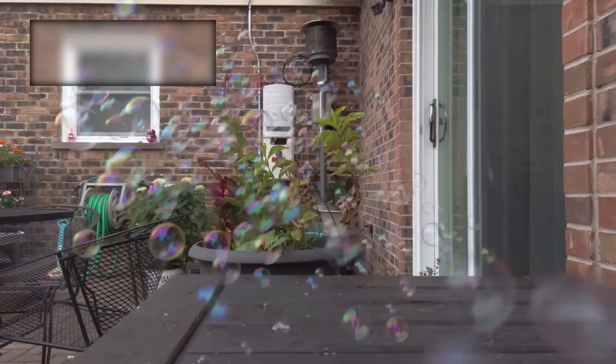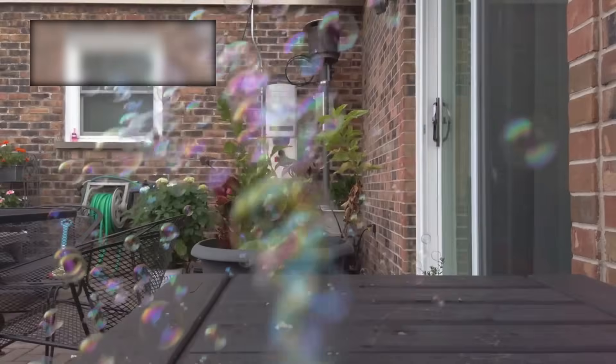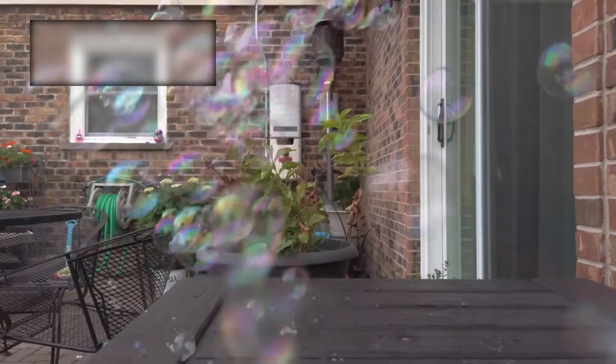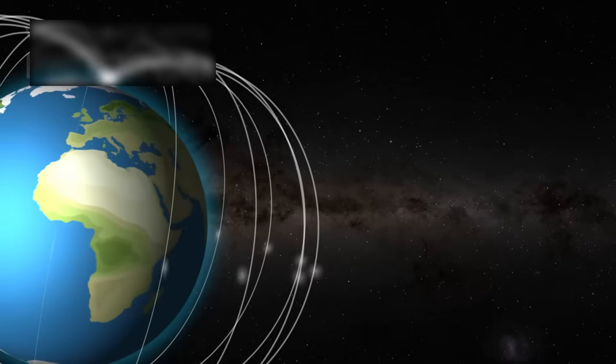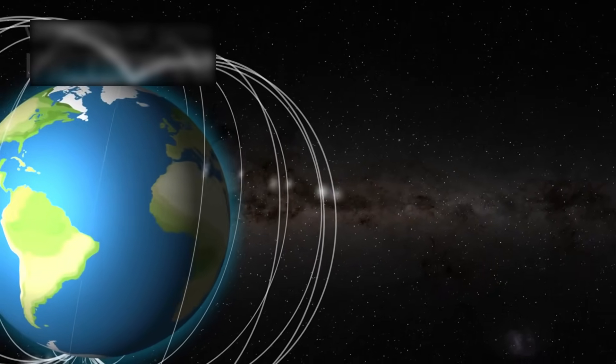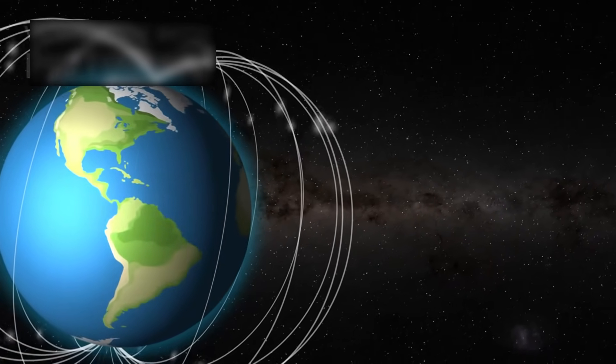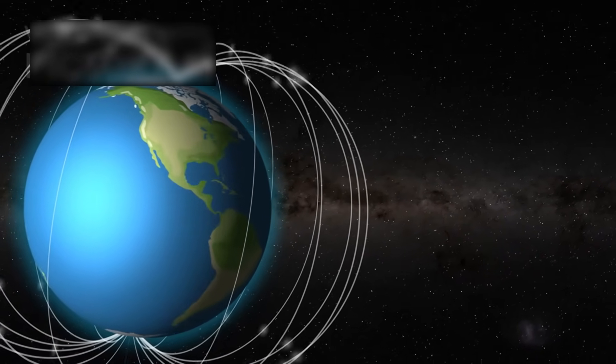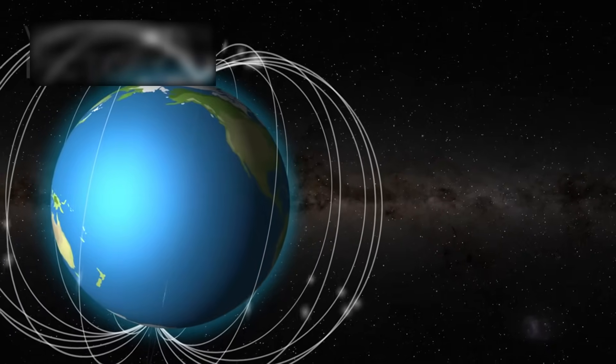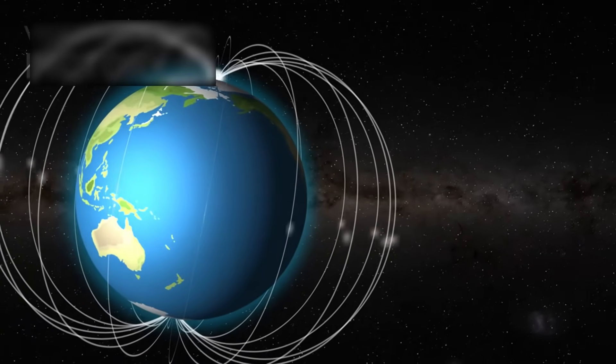One moment it was inside the solar system's protective bubble, the next it was thrust into a space dominated by alien forces. Instruments recorded a dramatic rise in cosmic radiation, spikes of over 70%, alongside a sudden increase in plasma density and a sharp shift in magnetic field structure. It was like stepping through a doorway into an entirely different room, one with rules and dangers of its own.